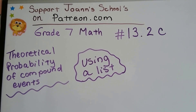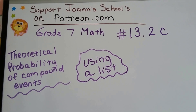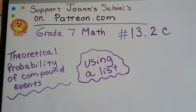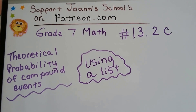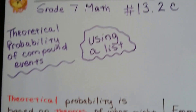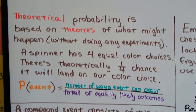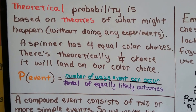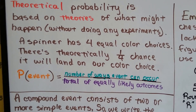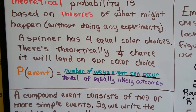Grade 7 math, number 13.2c: theoretical probability of compound events using a list. As we said before, theoretical probability is based on theories of what might happen without doing any experiments.